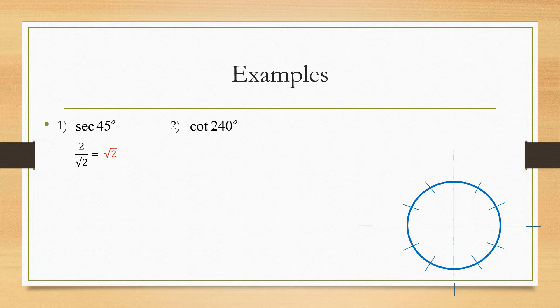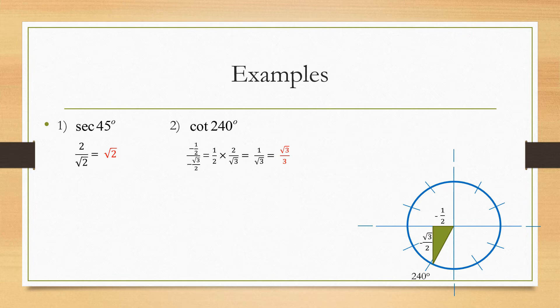The next example: cotangent of 240 degrees. Find where 240 degrees is on the unit circle — there it is. Draw our little triangle. Cotangent is the inverse of tangent, which is opposite over adjacent. Notice both values are negative because we're going in the negative direction — the adjacent is negative one half and the opposite is negative radical three over two. Since we're doing cotangent, flip tangent to get adjacent over opposite.